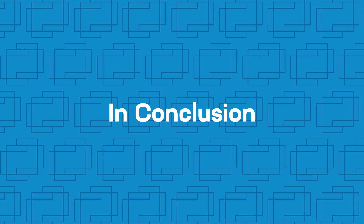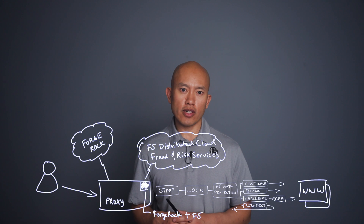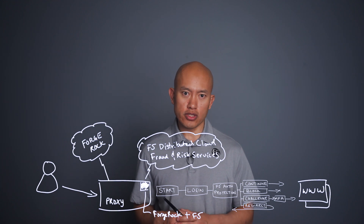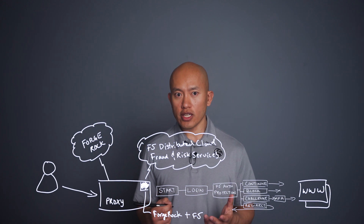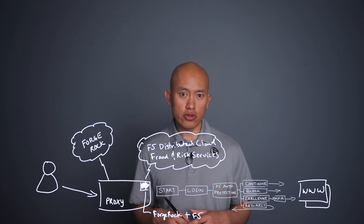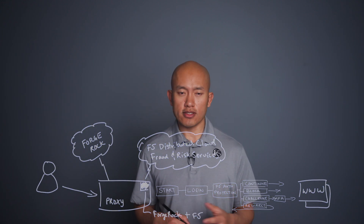So to summarize, combining the ForgeRock customer identity and access management solution along with F5 Distributed Cloud Fraud and Risk Services is going to enhance the security for your application and solve for use cases around account protection, various fraud scenarios, and also allow you to enable continuous authentication capabilities to benefit your user's experience. If you have any questions, feel free to leave them in the article linked below or drop them in the comments for this video. Be sure to hit like if you enjoyed this video and subscribe if you want to see more, and otherwise we'll see you on the next one.